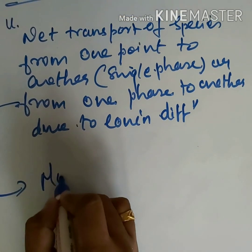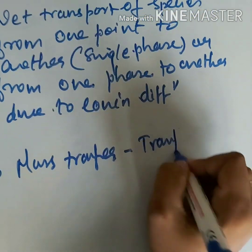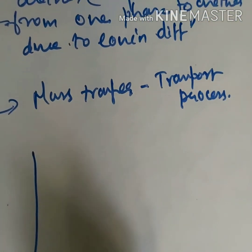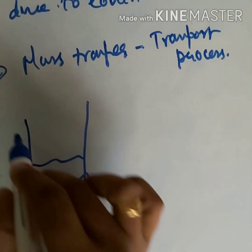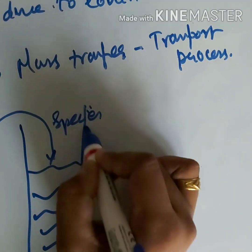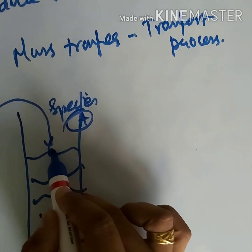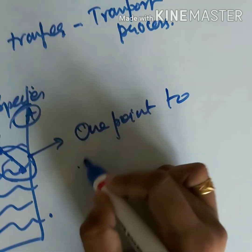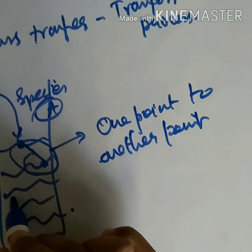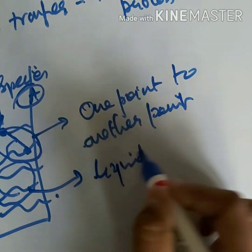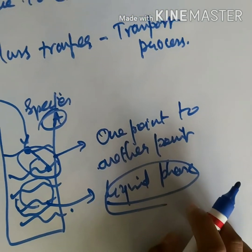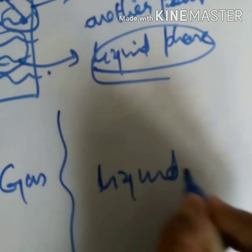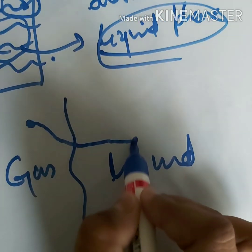From this definition, it is clear that mass transfer is a transport process. From one point to another point means — consider a beaker filled with some liquid; a species A is added and moves from one point to another through the liquid medium, that is, through a single phase. From one phase to another phase refers to the transfer of a species between two different phases.